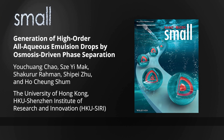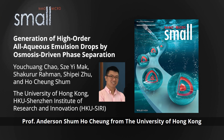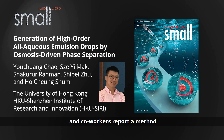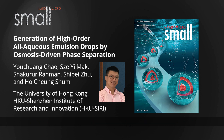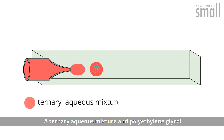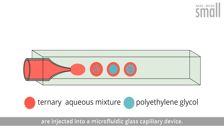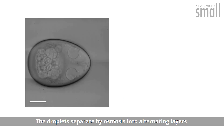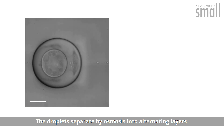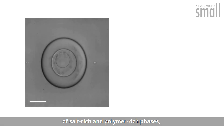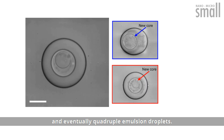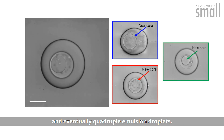In their article in Small, Professor Anderson Sum Ho Chun from the University of Hong Kong and co-workers report a method to prepare multi-phase, all-aqueous emulsions. A ternary aqueous mixture and polyethylene glycol are injected into a microfluidic glass capillary device. The droplets separate by osmosis into alternating layers of salt-rich and polymer-rich phases, sequentially generating double, triple, and eventually quadruple emulsion droplets.